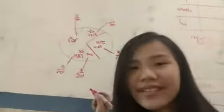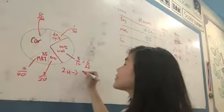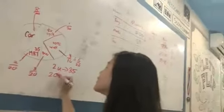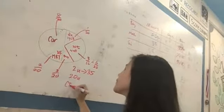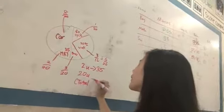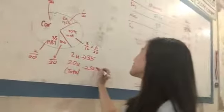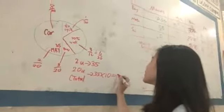So in conclusion, 2 units equals to 25. And in order to find 20 units, which is the total, 25 times 10, it equals to 250.